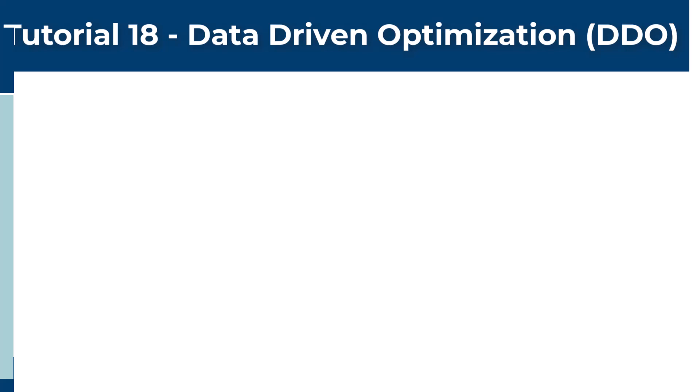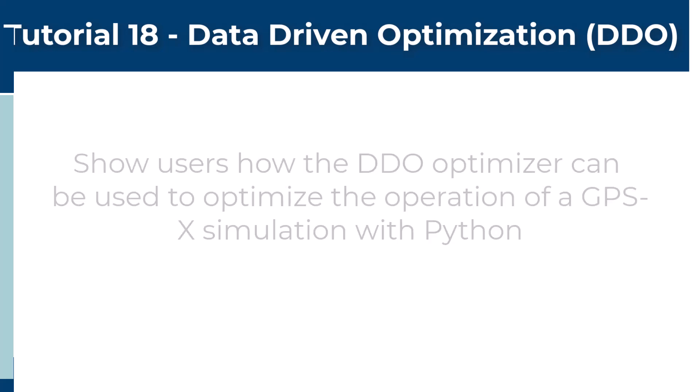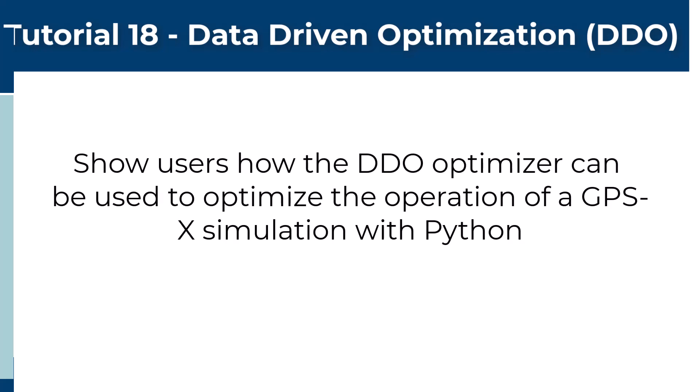As an alternative to the Nelder-Mead Simplex method, the DDO method has been included in GPSX. When performing an optimization with the DDO optimizer, the computational time required is largely independent of the number of parameters being manipulated, but rather depends on the model's complexity and the number of iterations desired. The goal of this tutorial is to show users how the DDO optimizer can be used in Python to optimize the operational parameters in a GPSX layout.